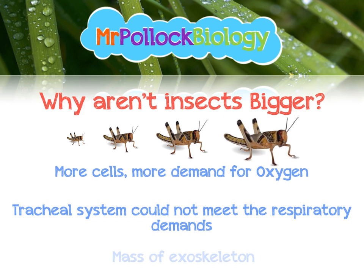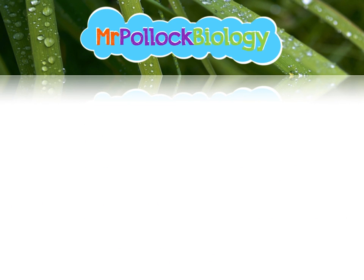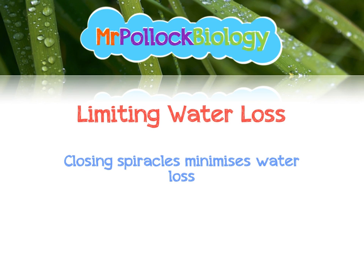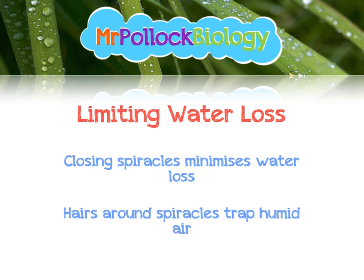Also, as we get bigger, the mass of the exoskeleton increases, and that would cause the insect to move less, or even not be able to move at all, which is a massive problem. Insects are quite prone to desiccation with all those holes along the side at the spiracles, so they have to limit water loss. They close spiracles as often as they can to minimise water loss, and they have hairs around the spiracles to trap humid air, which results in less water loss. Also, if they need to close their spiracles for a long period of time, some of them have air sacs along the trachea which allow them to store a small amount of oxygen, just in case they can't ventilate for whatever reason.